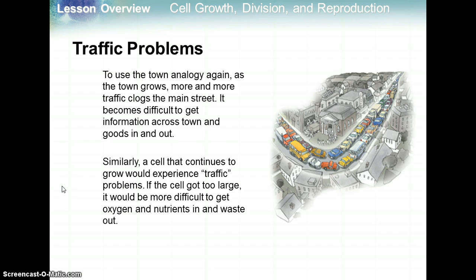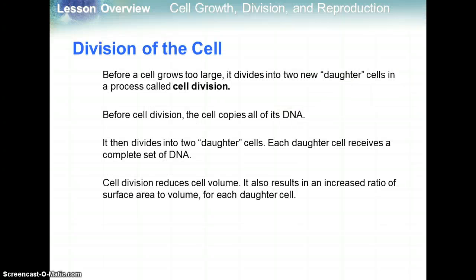This is synonymous with traffic problems in a town. As a town grows, more and more traffic clogs the main street, making it difficult to get information across town and goods in and out. Similarly, a cell that continues to grow would experience traffic problems — if it got too large, it would be more difficult to get oxygen and nutrients in and out, like a traffic jam. So the cell would need to divide to maintain a large surface area to volume ratio.